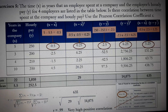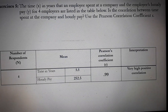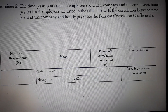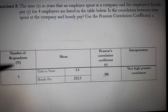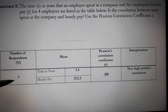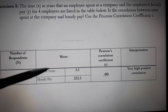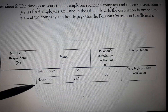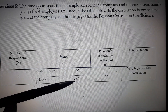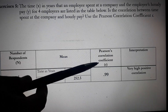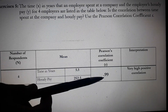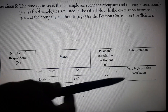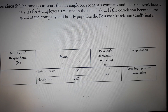Now, how do we present the result? We can present it in table form, showing the number of respondents (4), the mean time in years (5.5), the mean hourly pay (252.5), the Pearson correlation coefficient R of 0.99, and the interpretation: very high positive correlation.